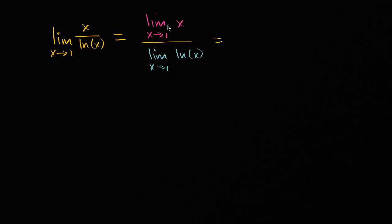And so if it's continuous, the limit as x approaches one of x is just going to be this evaluated at x equals one. So this is just going to be one. We just put a one in for this x. So the numerator here would just evaluate to one.